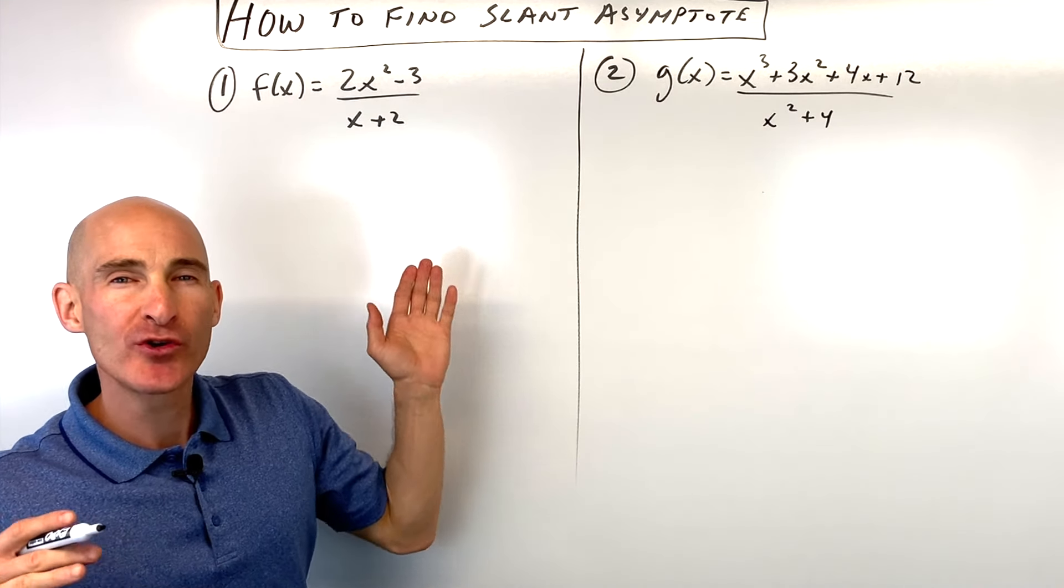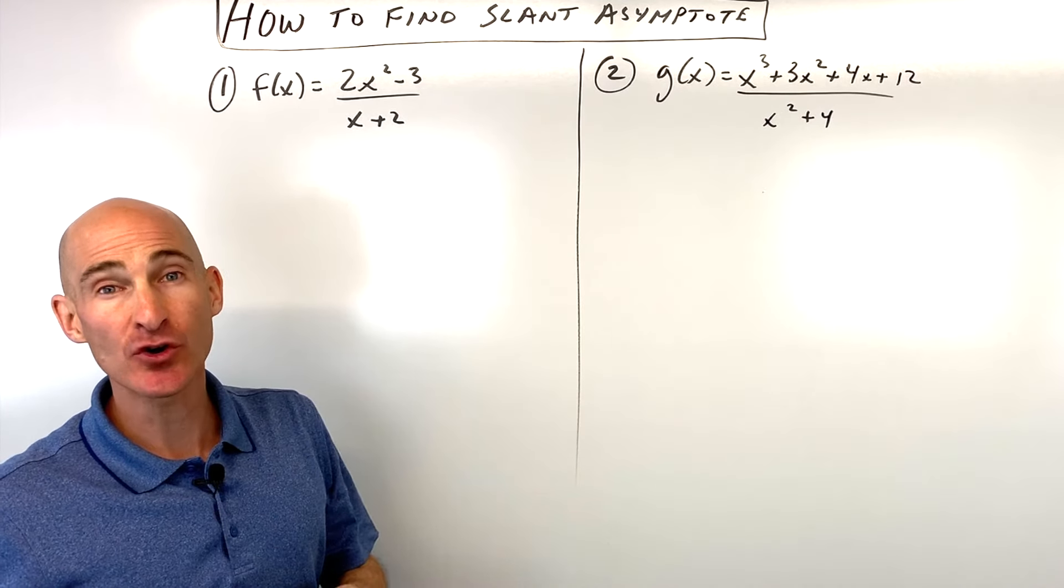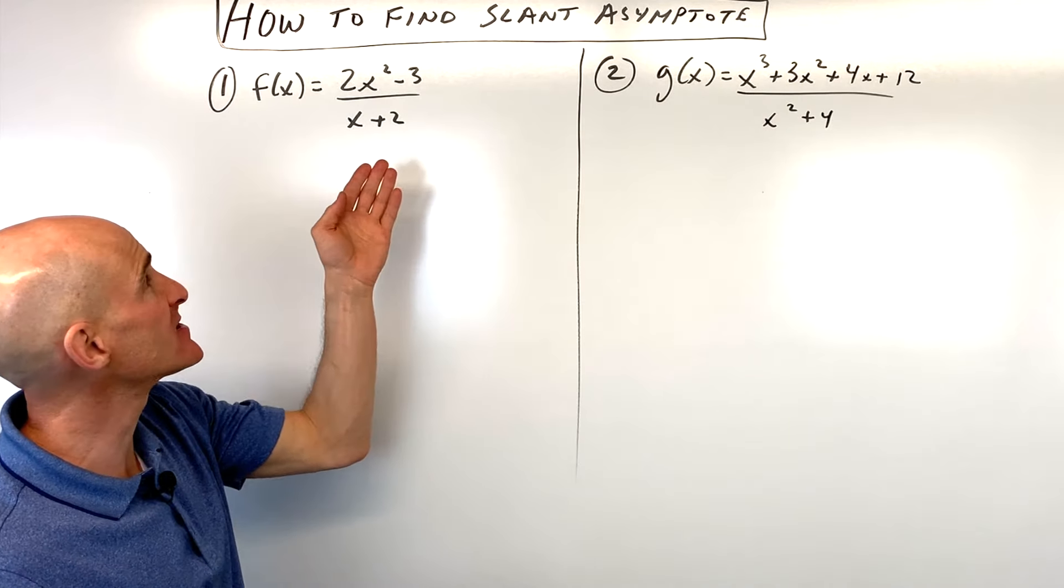When you're graphing a rational function, how do you know when you have a slant asymptote or a diagonal asymptote or an oblique asymptote? Those all mean the same thing.